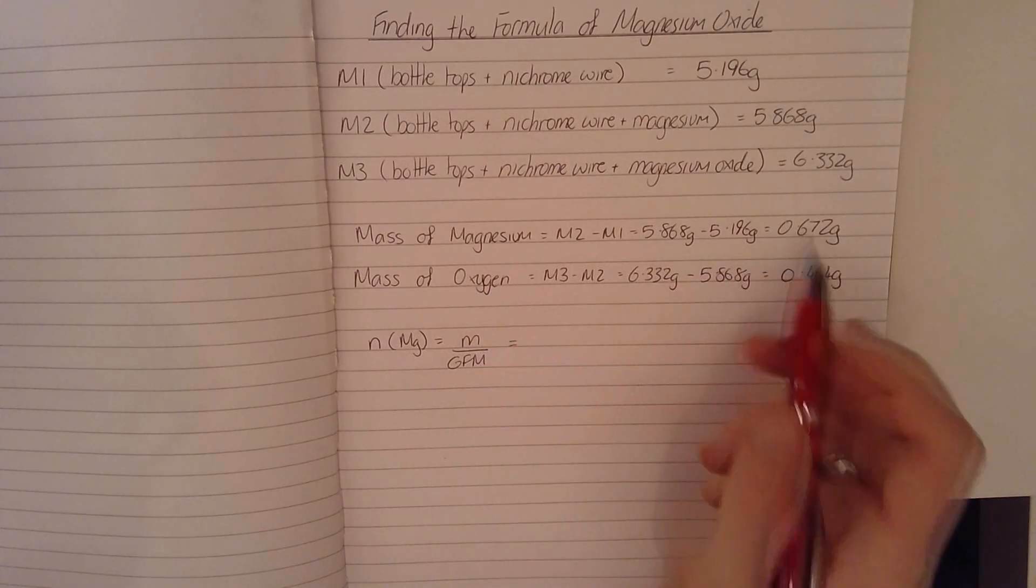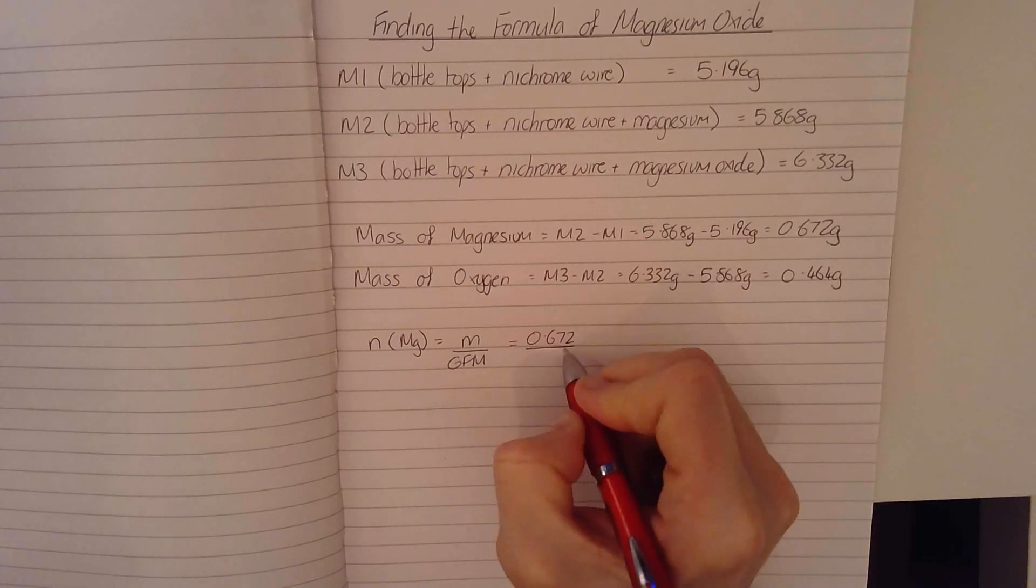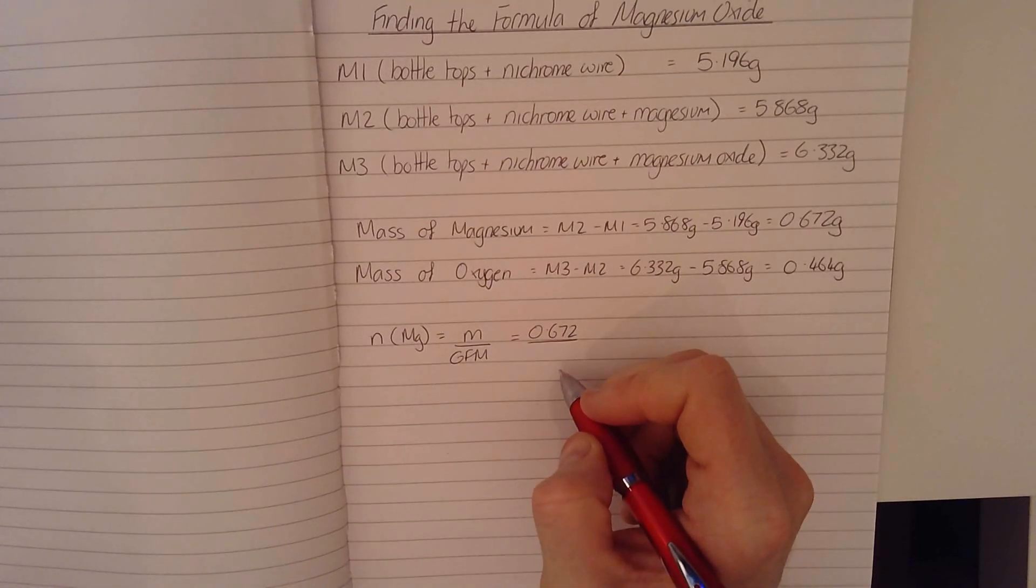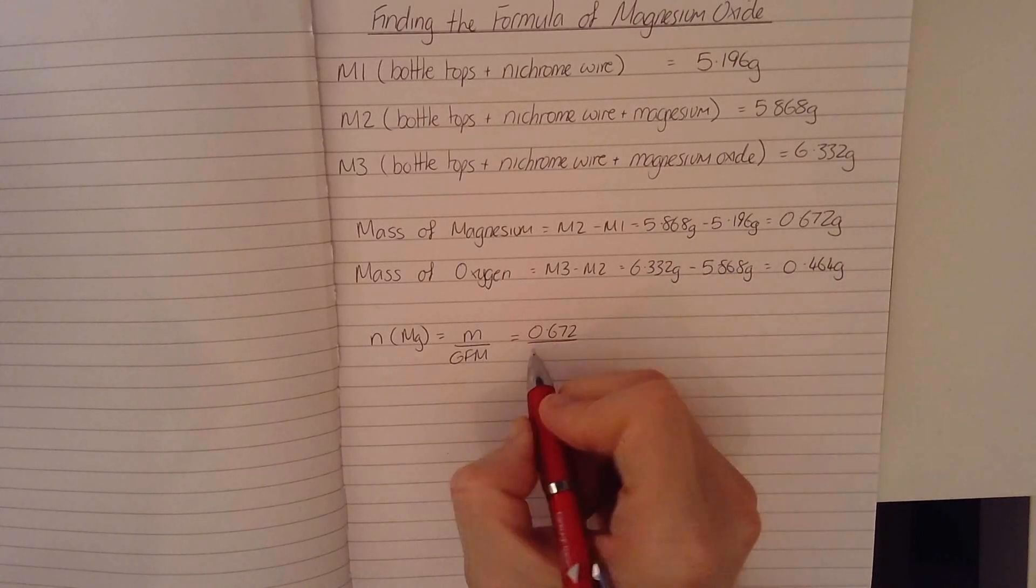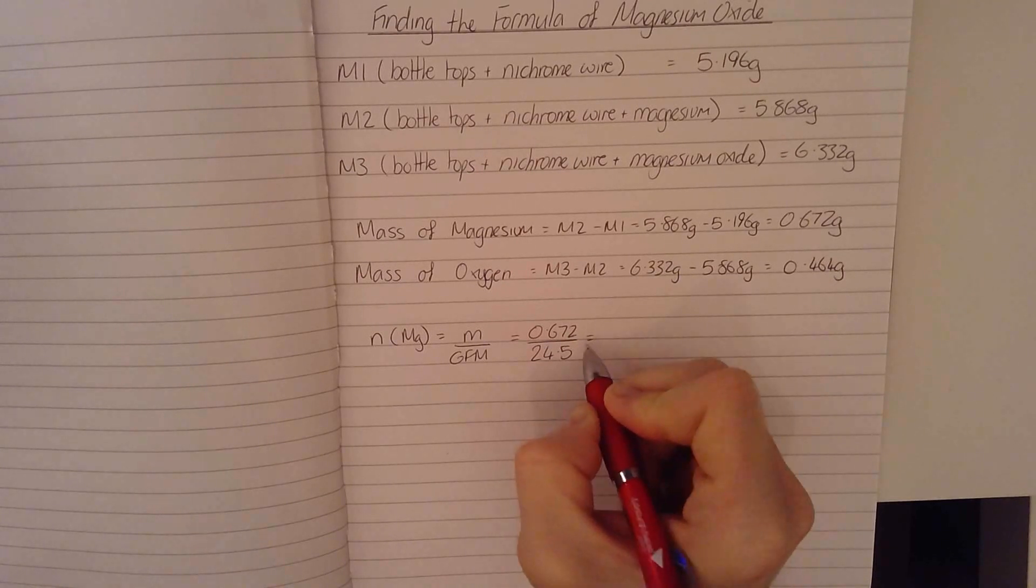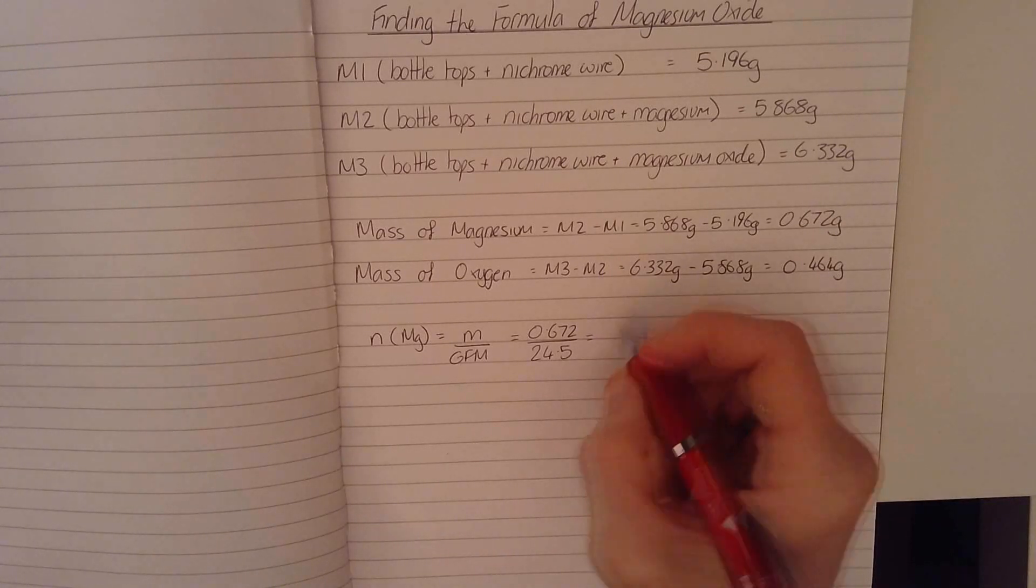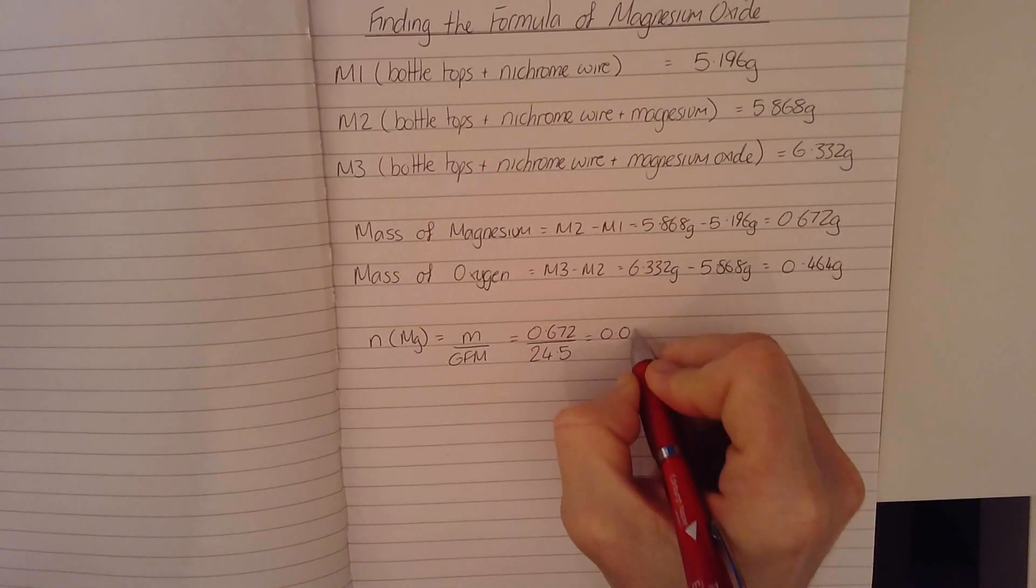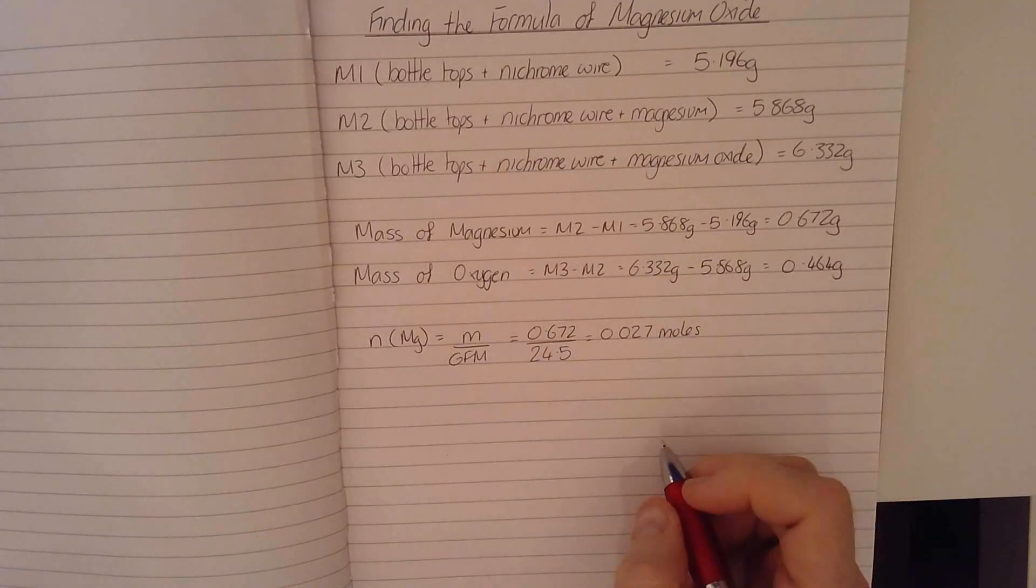So the mass of magnesium that I had is 0.672. And if I look at the data booklet, I find that the relative formula mass of magnesium is 24.5. So if I plug that into my calculator, I find I have got 0.027 moles of magnesium.